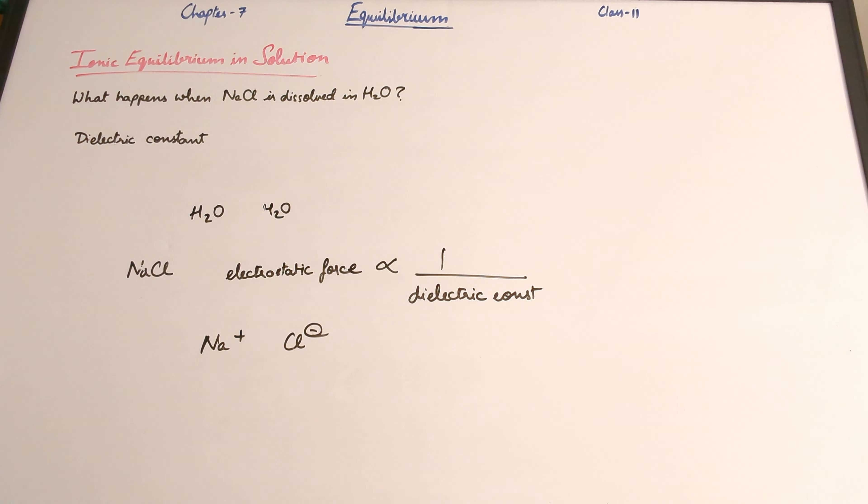So when sodium chloride is in the solid state, it exists as an ionic cluster. It does not conduct electricity — we've discussed that in the previous video. So when you have NaCl, the forces that hold the sodium and chlorine together is an electrostatic force because it's an ionic bond.